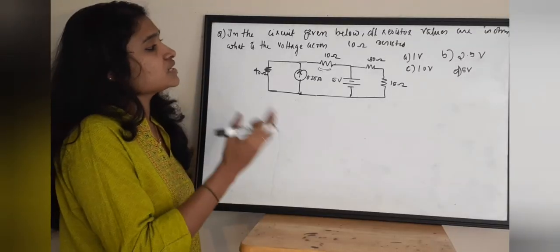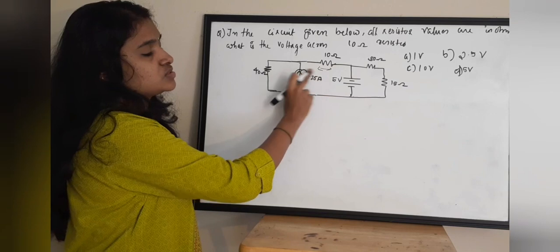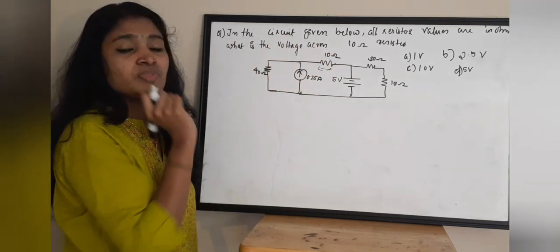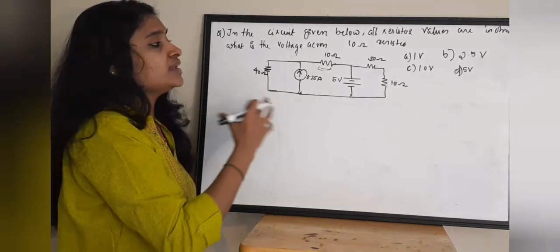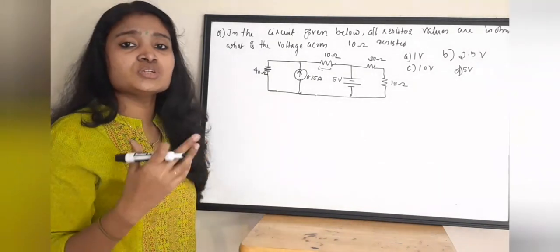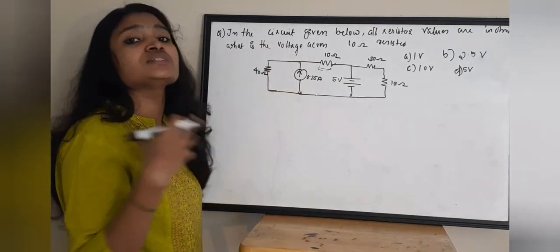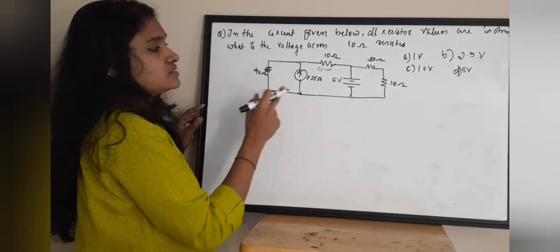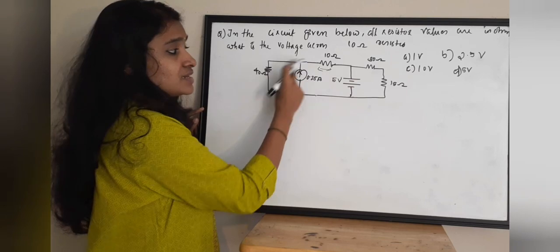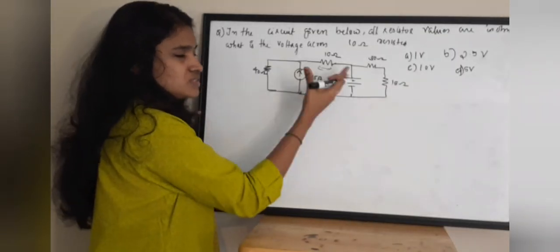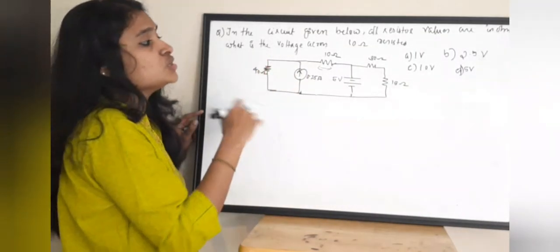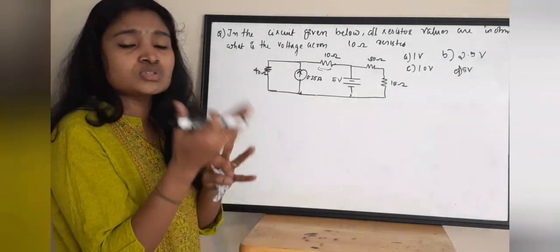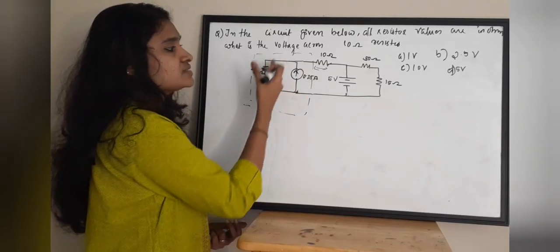Next question: what is the voltage across the 10 ohm resistor? We need to find the voltage across that 10 ohm resistor. To solve this, we can apply the source transformation principle. If you see this circuit, there is a current source and there are voltage sources — a mixed type of source. We need to simplify all sources to either voltage sources or current sources.